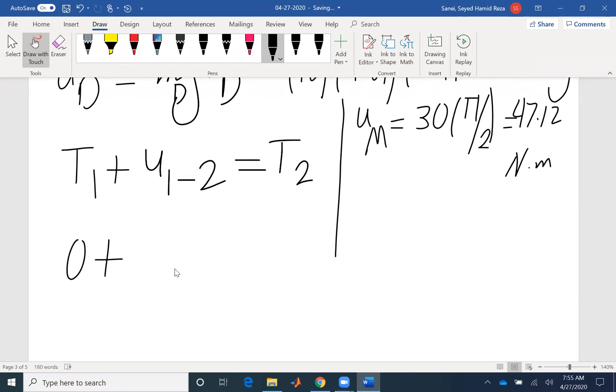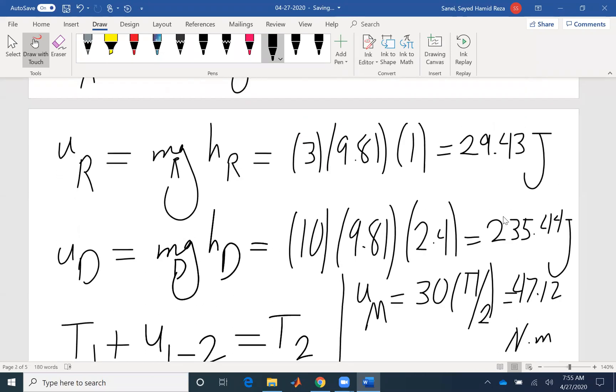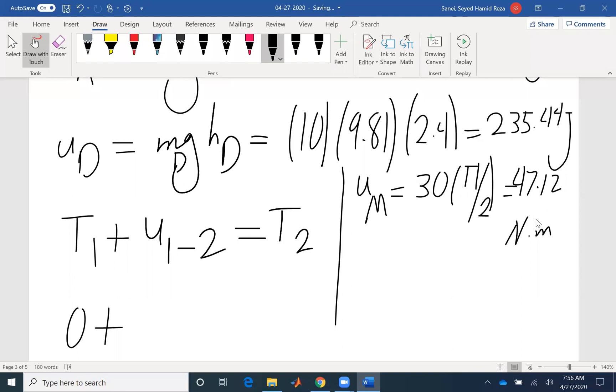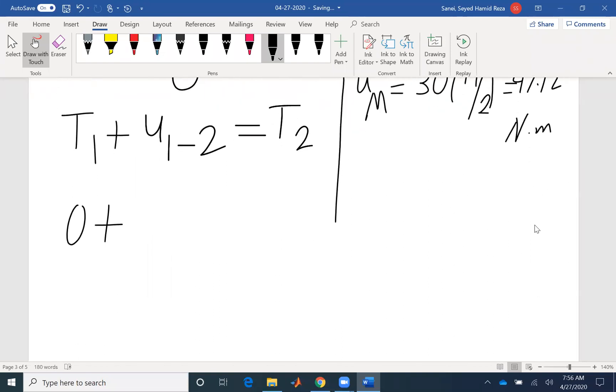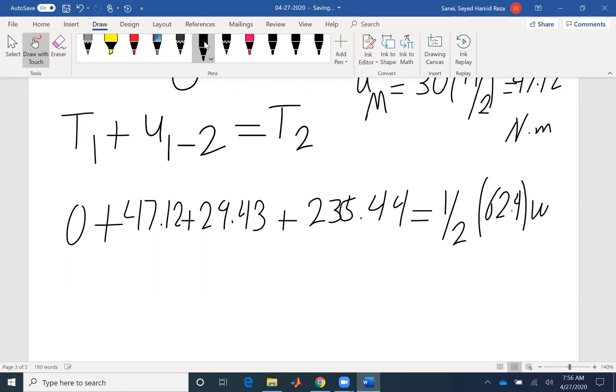I just need to add all the components that I found here: 29.43, 235.44 and 47.12, all of them are positive. If I add them together, 47.12 plus 29.43 plus 235.44, I get T2, which is half I omega squared. I found I to be 62.4 omega squared. So omega is the only unknown. I found omega to be 3.6 radian per second.